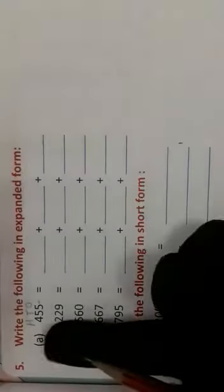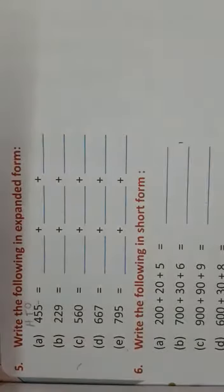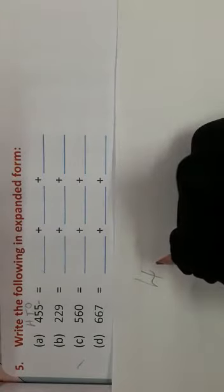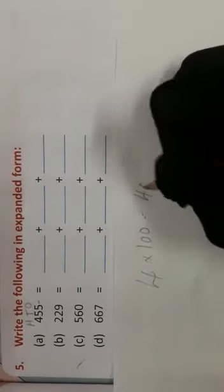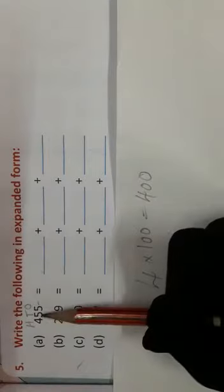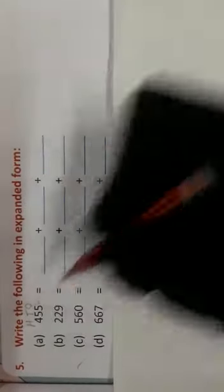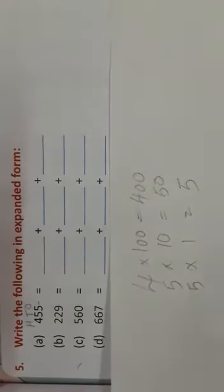First we put the place value on it: ones, tens, hundreds. Four at 100th position, we multiply 4 by its place value, its position. 4 into 100 is equal to 400. Now look at this digit, 5. Five at 10th place, we multiply 5 by 10. Five into 10 is equal to 50. Five at ones place, we multiply 5 by its position. Five into 1 is equal to 5. Now this is expanded form: 455 equals 400 plus 50 plus 5. Have you understood students?